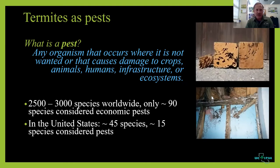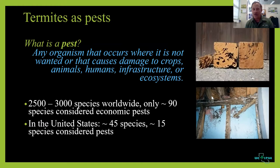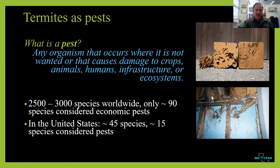Termites fall solidly into the category of pests when threatening our homes or infrastructure. But if you think about all termite species worldwide, only a small fraction are considered economic pests. The others play very important ecological roles: recycling nutrients, aerating soil, breaking down leaf litter. Here in the United States, we only have about 15 termite species managed as pests.